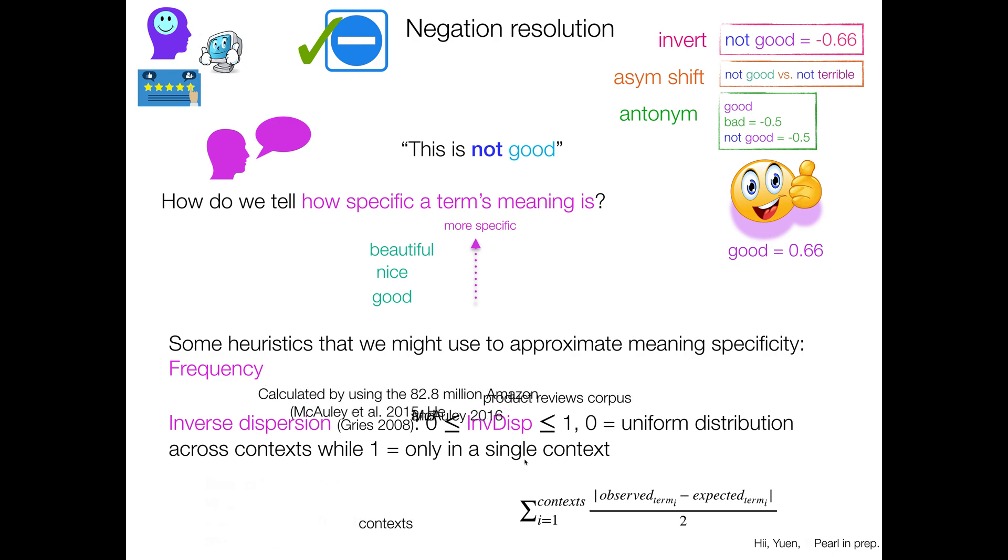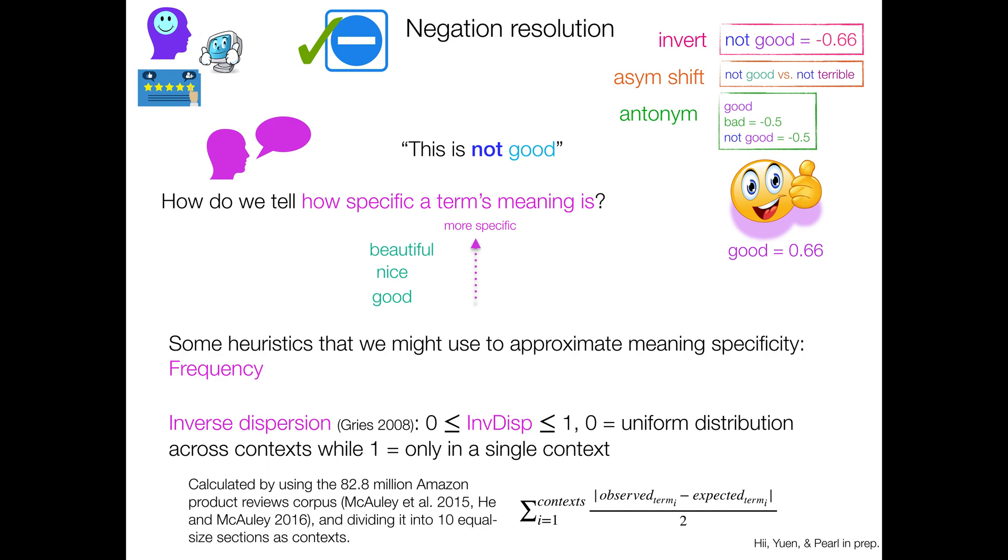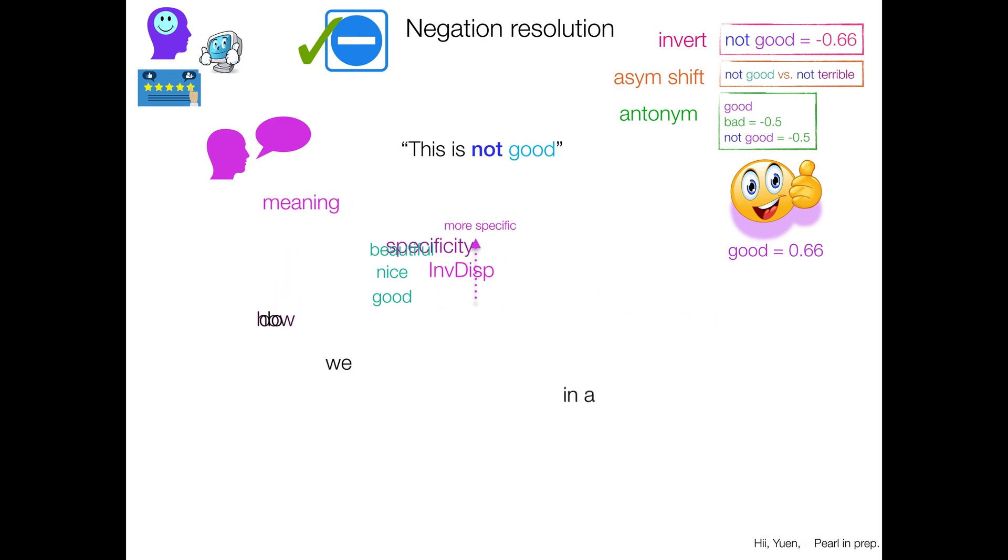But basically, how different are you from uniform? If you're not different, guess what? You're uniform. If you're really different, you're not uniform. So variety of contexts can be captured by this inverse dispersion measure.